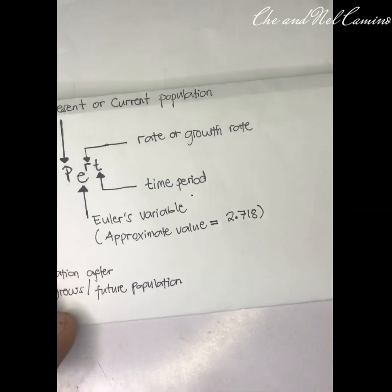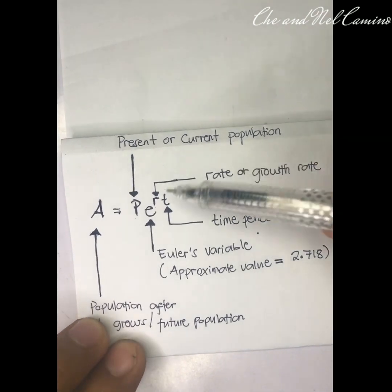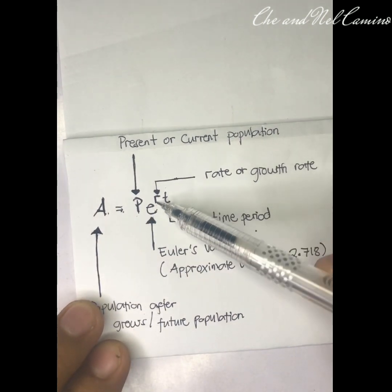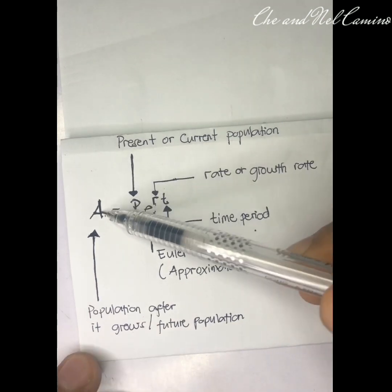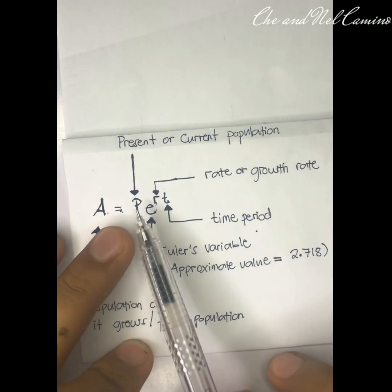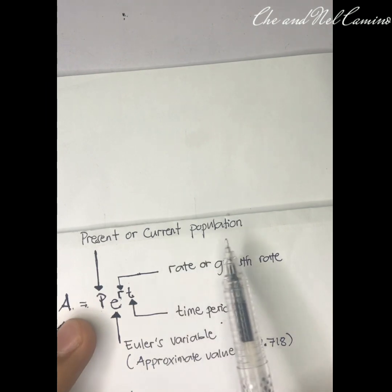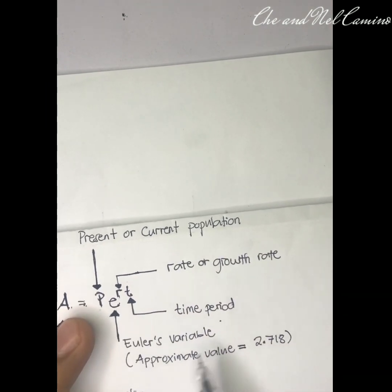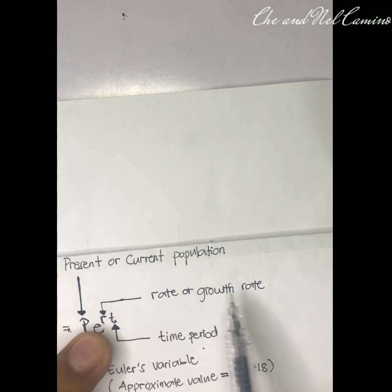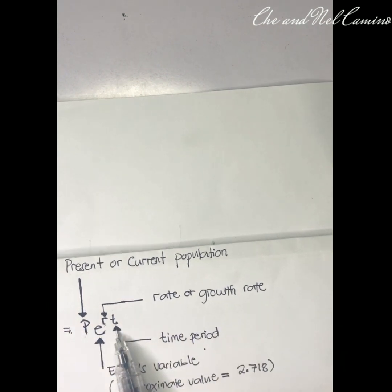In this video we are going to discuss all about the exponential growth formula with exponential decay problems. We have the formula A is equal to P times e raised to the power of R times T, where A is the population after it grows or future population, P is the present or current population, and e is Euler's variable with an approximate value of 2.718.